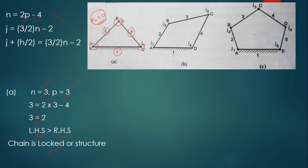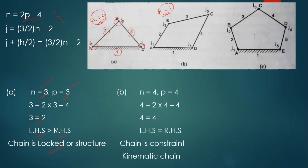Next, consider the four-bar mechanism, already known to be constrained (n = 1). Applying Equation 1: n = 4, p = 4 (pairs at points A, B, C, D). Substituting: 4 = 2(4) − 4 = 4. LHS equals RHS, confirming the given chain is a constrained kinematic chain.